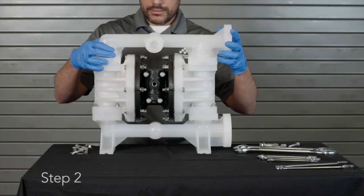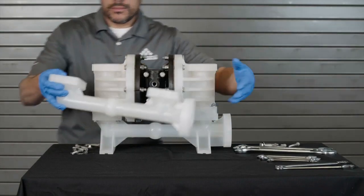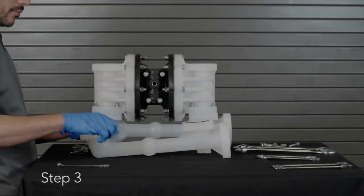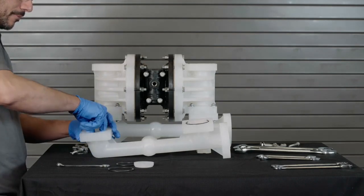Step 2: Once the screws, washers, and nuts are removed, remove the discharge manifold. Step 3: Remove the O-ring, valve seat, and ball from the discharge manifold.